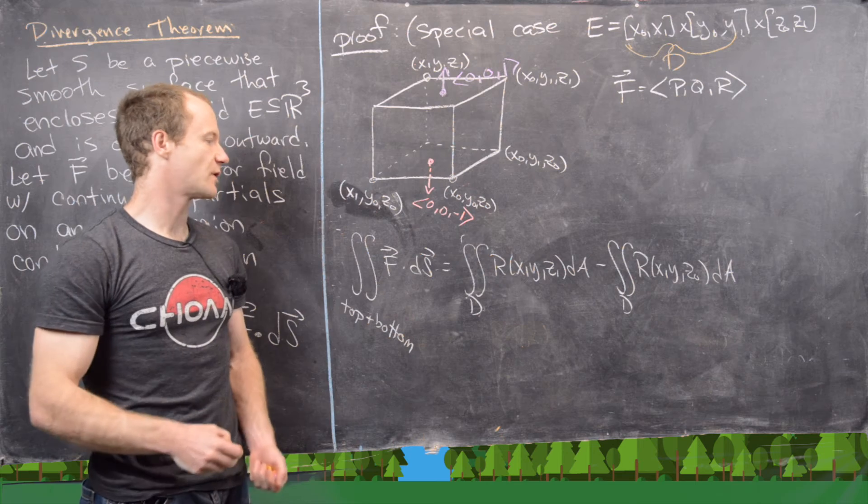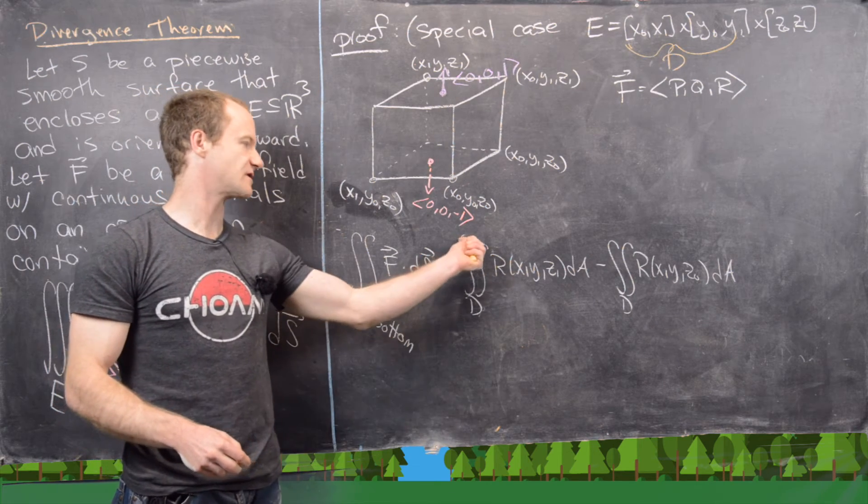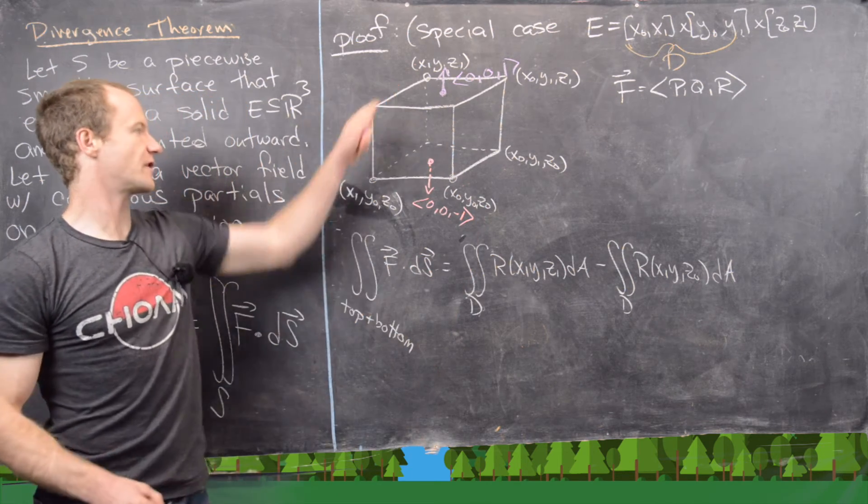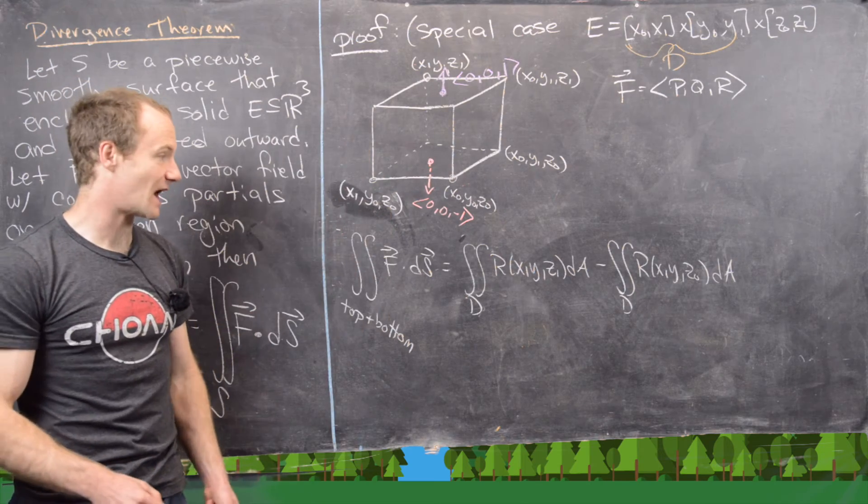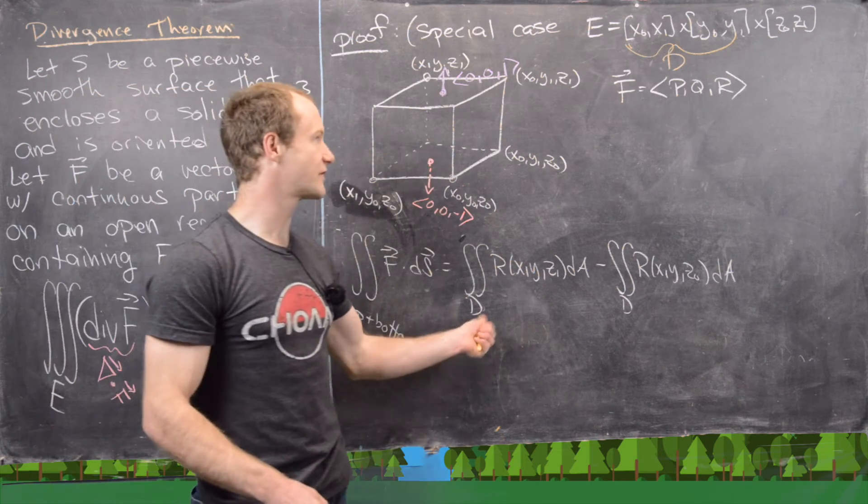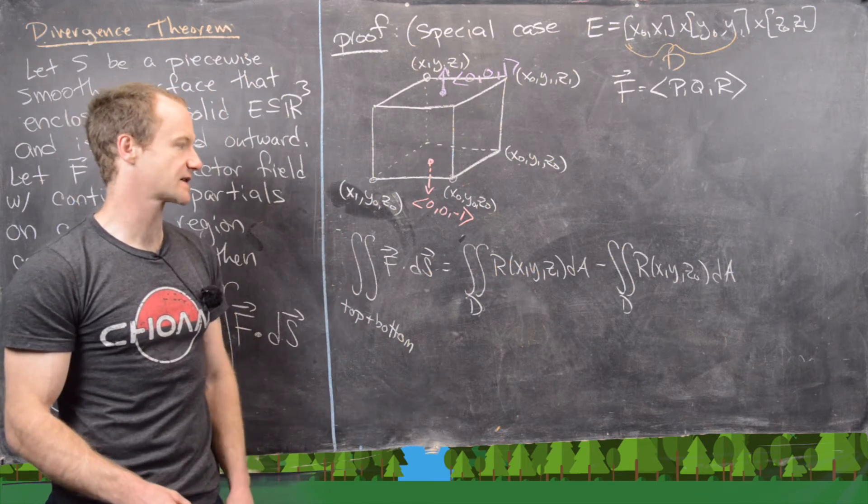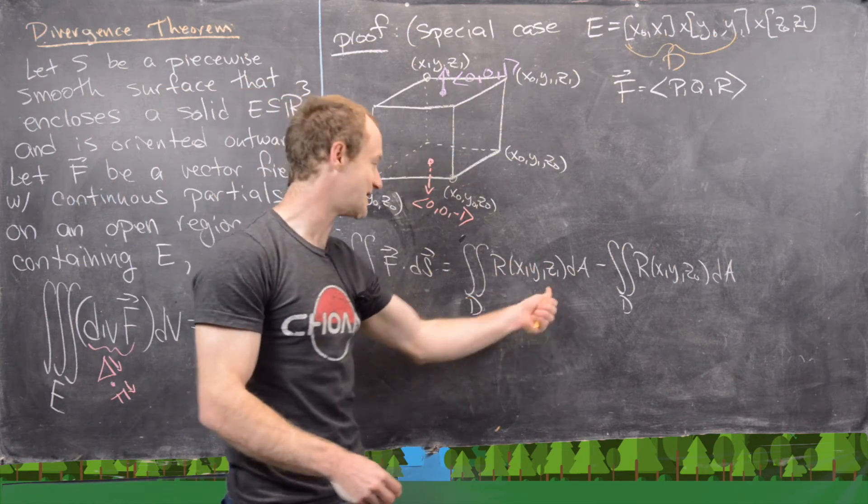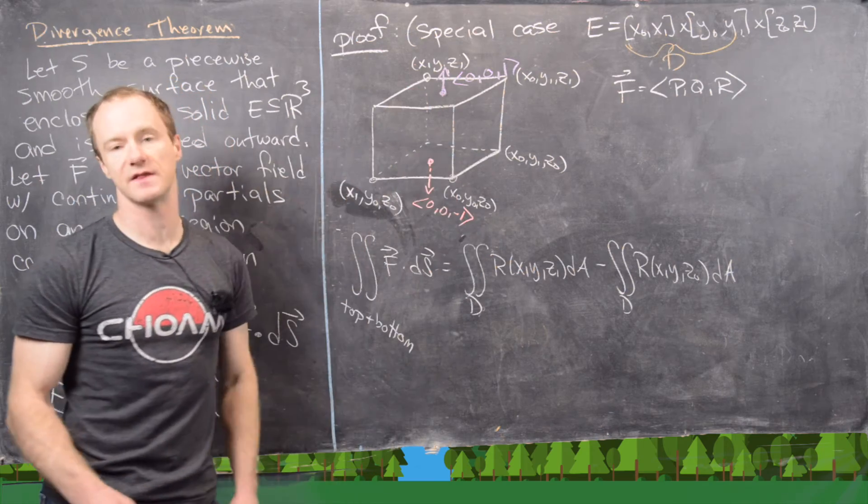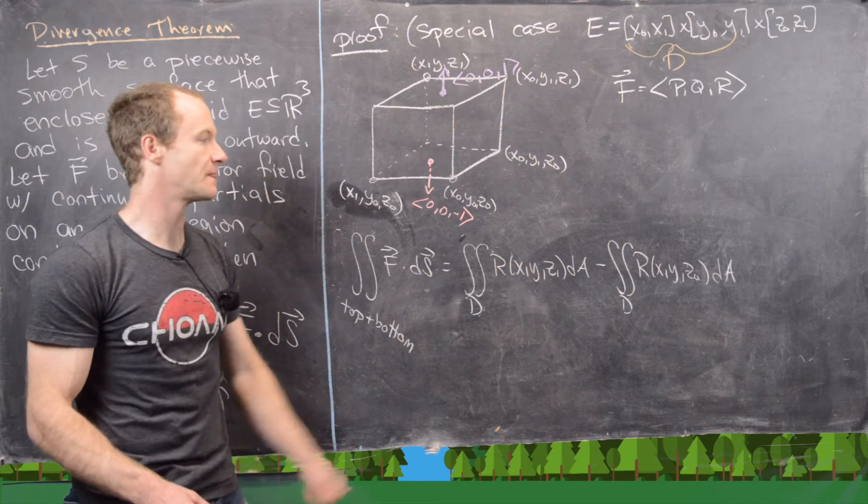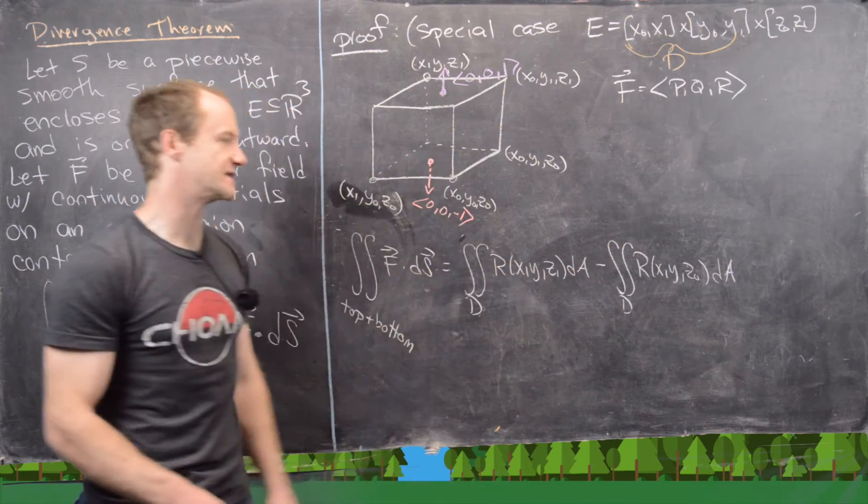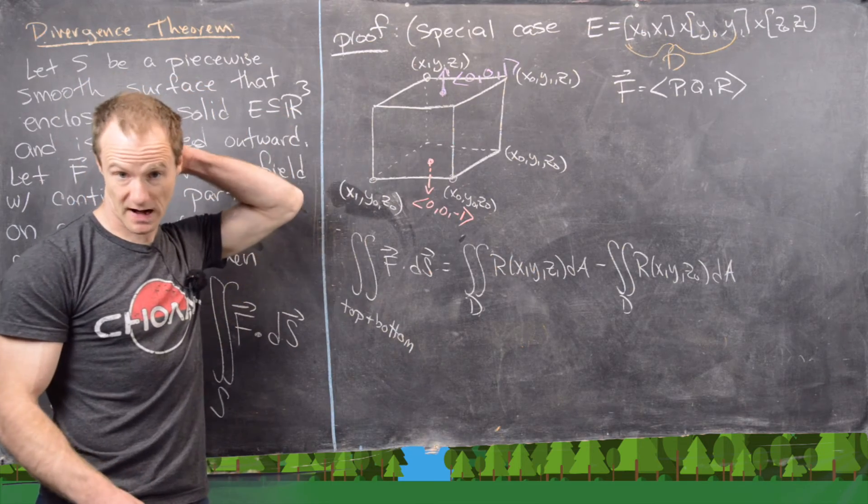So I'm going to go ahead and clean that up and then finish it off. On the last board we argued ourselves down to this point, so the surface integral over the top and the bottom of this box is given by the double integral over D, where we've described D as the first two parts of our box, of r(x, y, z₁) because we're fixed on the top plane for this first one, minus r(x, y, z₀) because we're fixed on the bottom.